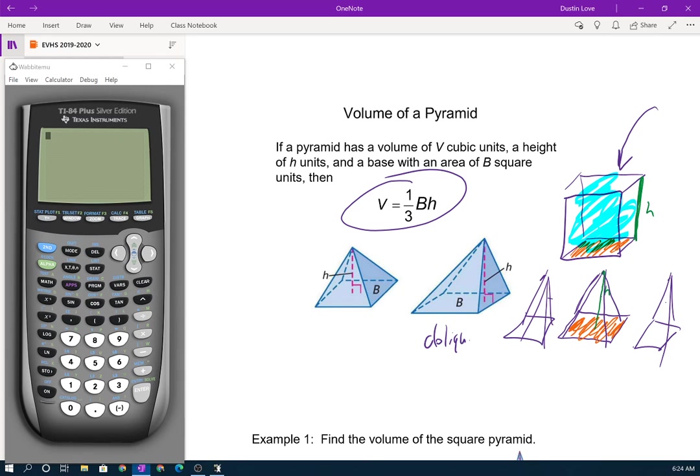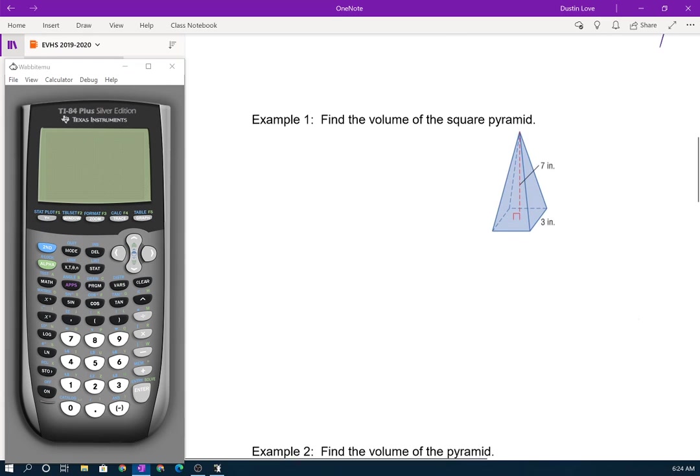That works for both right pyramids and oblique pyramids. I don't remember if I threw out that word last time, but oblique means it's just not centered. We're looking at true height there, not slant height, and that's it.